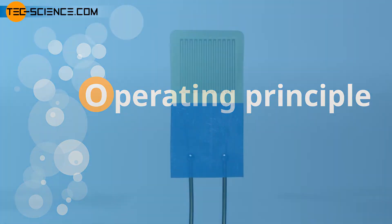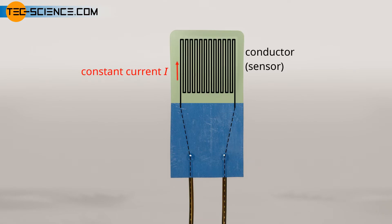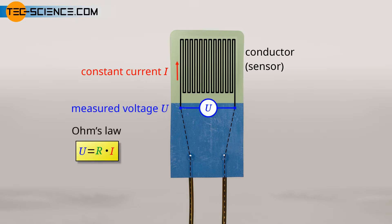Operating principle. In resistance thermometers, a constant electrical current flows through a conductor which serves as the sensor. The currents are usually less than 1 milliampere to avoid excessive heating by the current. According to Ohm's law, at a constant current the voltage at the measuring conductor varies depending on the electrical resistance and thus on the temperature.